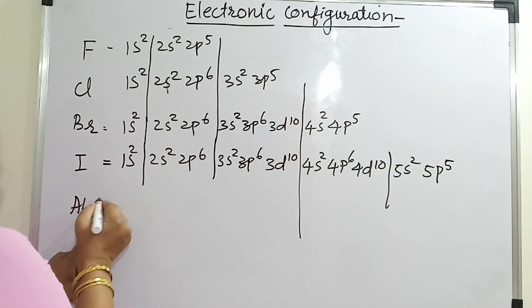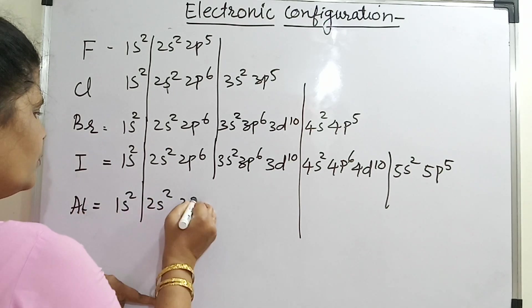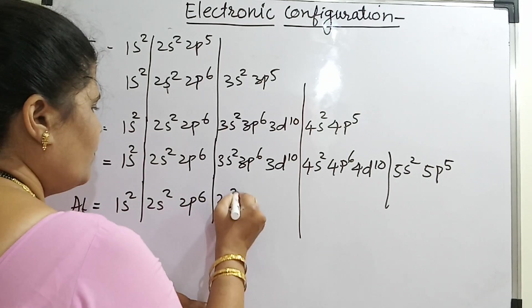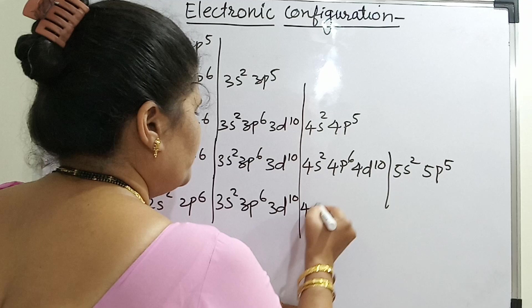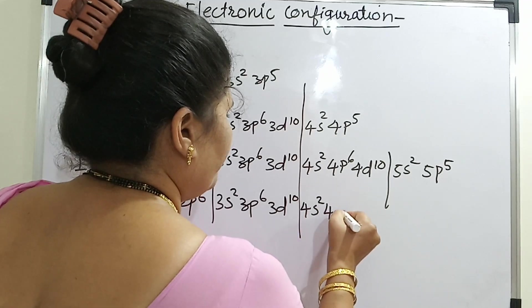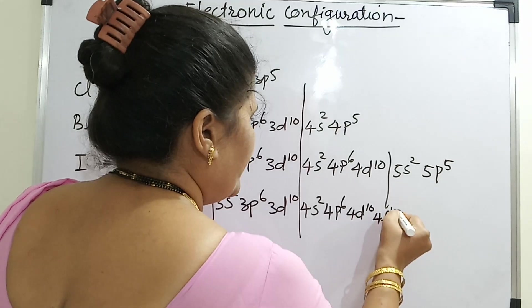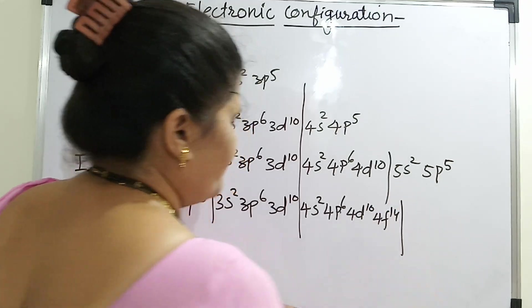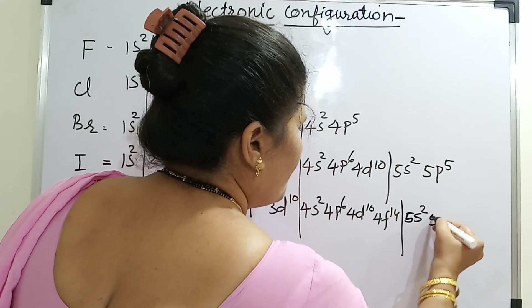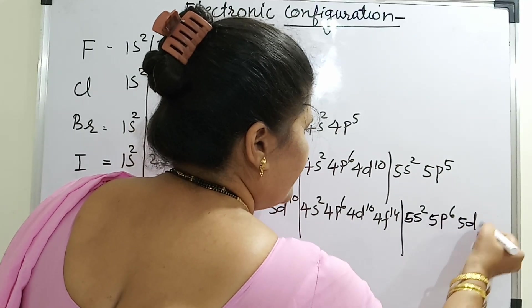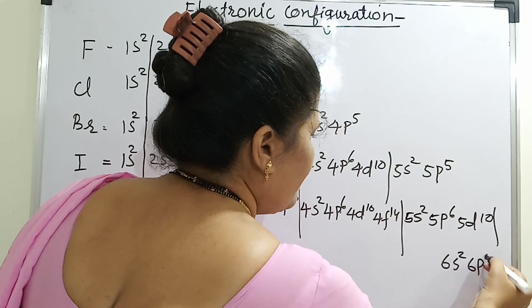For astatine: 1s2, 2s2, 2p6. One thing you have to remember here is that you have to introduce 4f. So continuing: 4p6, 4d10, 4f14 — this finishes the fourth principal quantum number. Then 5s2, 5p6, 5d10, and the last: 6s2 and 6p5.